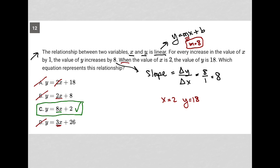Now, if there were more answer choices that had an m value of 8, we would have then taken this ordered pair or this point, x equals 2 and y equals 18, and actually plugged it into the equation. I can show you here with choice C.